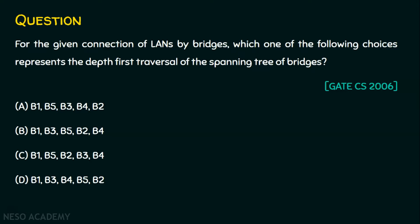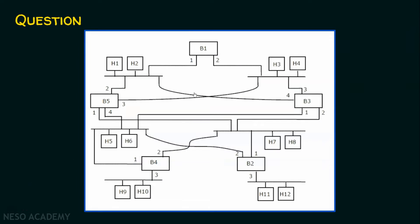If you are watching this lecture directly without watching my previous lecture titled Spanning Tree Protocol, I request you to watch the previous lecture first and then come to this problem, so that you will have a better understanding. We are required to find the depth first traversal of the spanning tree. But what is given is not a spanning tree, because there are loops and cycles. A spanning tree is a tree which does not have a cycle, so we are required to convert this into a spanning tree.